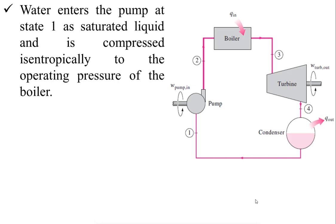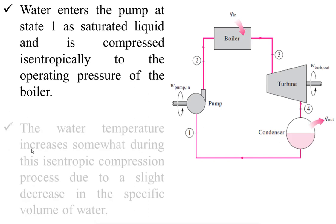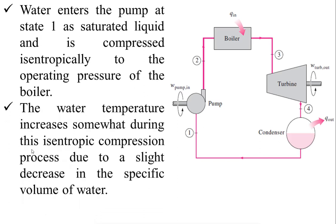Water enters the pump at state point one as a saturated liquid and is compressed isentropically to the operating pressure of the boiler. The water temperature slightly increases due to isentropic compression. There is a slight decrease in specific volume of water — since water is incompressible, it does not compress significantly, but due to high compression, volume slightly decreases, and as a result temperature increases.